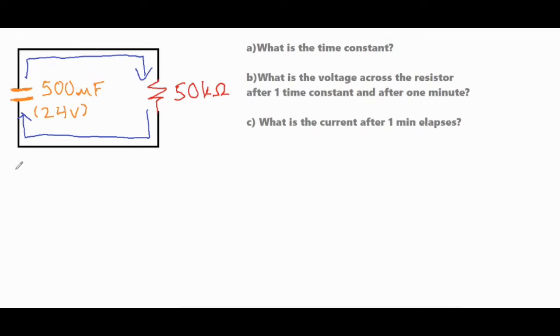Now what we're going to solve for first is that time constant which is the product of R and C, our resistance and our capacitance, which we both have so let's go ahead and plug those in and see what we get.